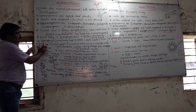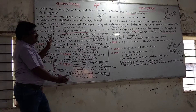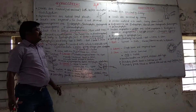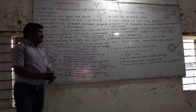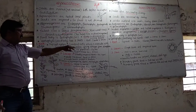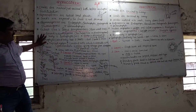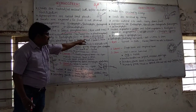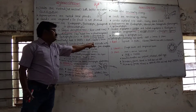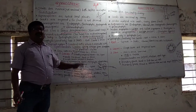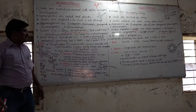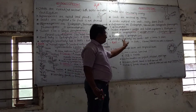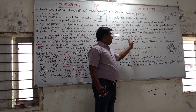In both gymnosperms and angiosperms, the plant body is a sporophyte. The sporophyte is diploid and is divided into three parts: root, leaves, and stem.